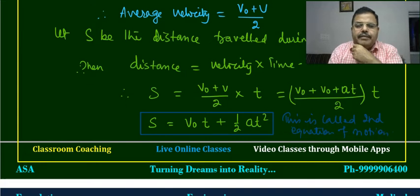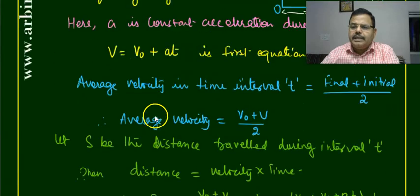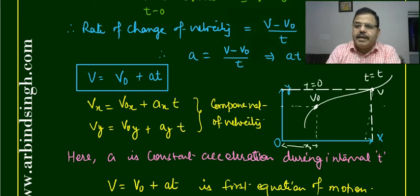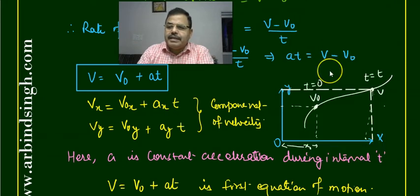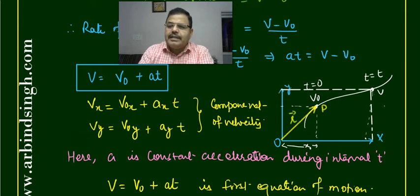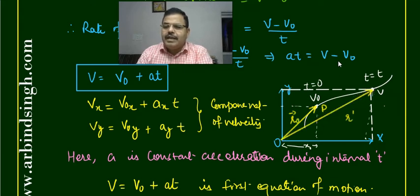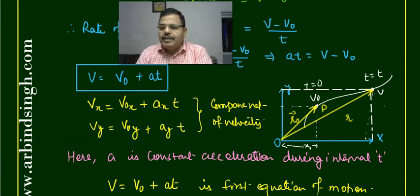उम्मीद है कि यह समझ में आ रहा होगा। इसी बात को position vector के terms में हम express कर सकते हैं। यहाँ पर जो position vector है — इन दोनों points के position vectors हैं, और इन position vectors के हिसाब से हम define कर सकते हैं। यहाँ पे initial position vector r₀ है; time t = 0 पर velocity v₀ है, और position r₀ है।